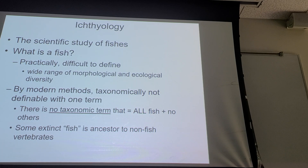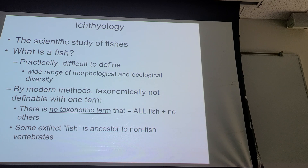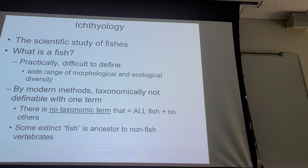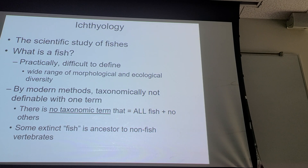Amphibians — all amphibians. Reptiles — all of them. And birds as well. So all those organisms — amphibians, reptiles, mammals, birds — evolved from an ancestor that was a fish.